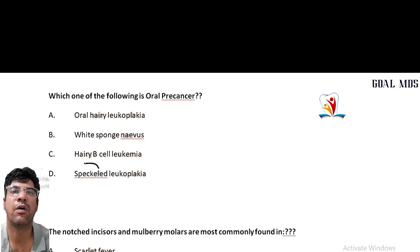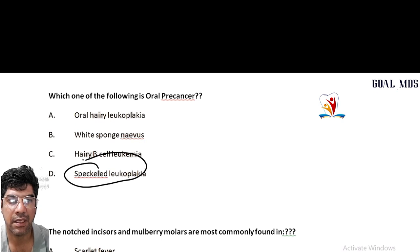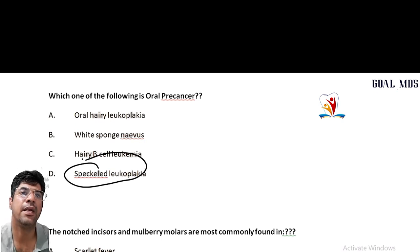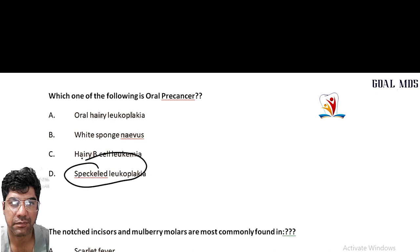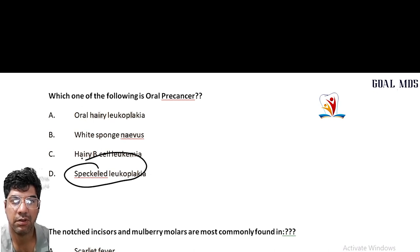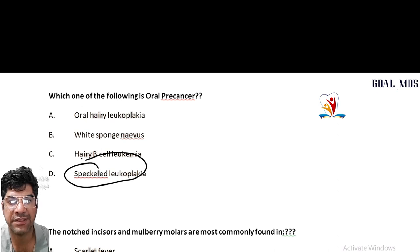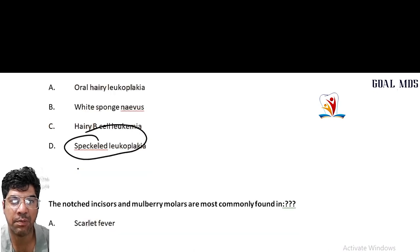Which one is an oral precancerous lesion? It is speckled leukoplakia. Speckled leukoplakia is an oral precancerous lesion, also known as erythroleukoplakia or mixed leukoplakia.